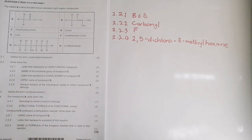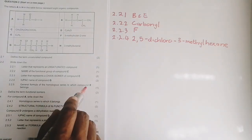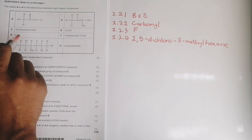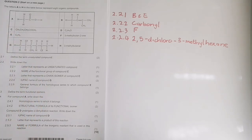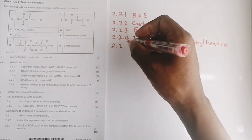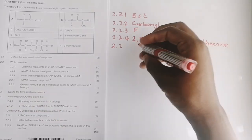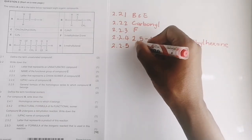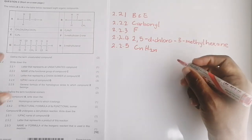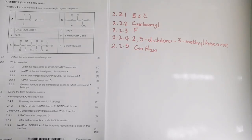Question 2.2.5 asks: write down the general formula of the homologous series to which compound E belongs. Compound E has the molecular formula C₂H₄, which is an alkene. The general formula of alkenes is CₙH₂ₙ, and you can see that C₂H₄ follows that formula.